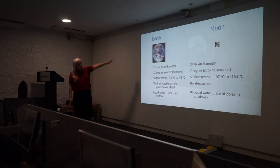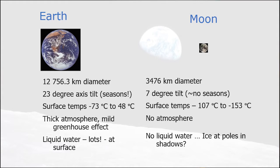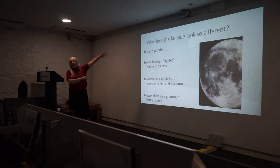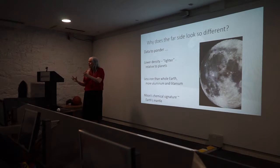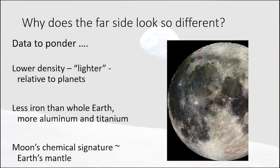This summary gives our sizes and tilts — 1.5 plus 5 degrees gives about 7 degrees. For temperatures: Earth has a nice atmosphere keeping temperatures steady, roughly minus 73 to plus 48°C. The moon ranges from minus 170 to plus 130°C. Earth has a thick atmosphere with greenhouse effect and lots of liquid water. The moon may have some ice at the poles. The moon's density is quite low compared to terrestrial planets — there's less iron, more aluminium and titanium, and the moon is compositionally like the Earth's mantle.